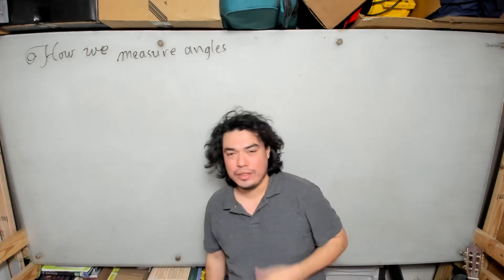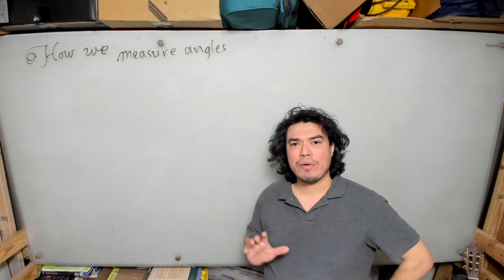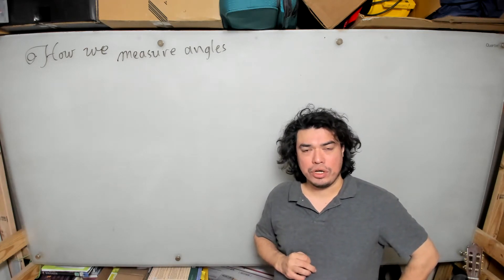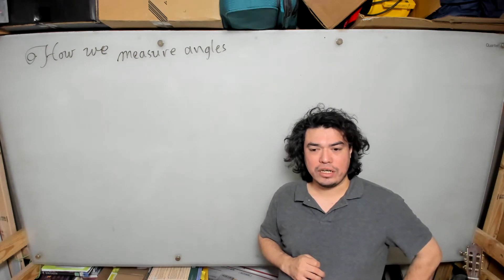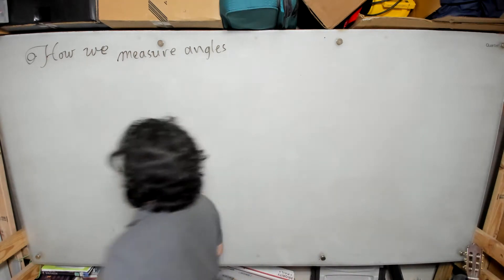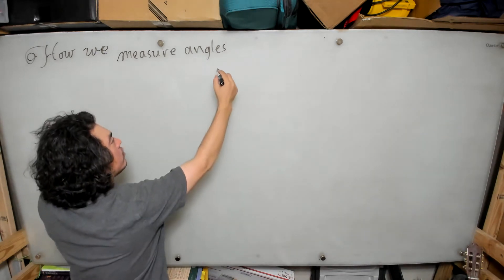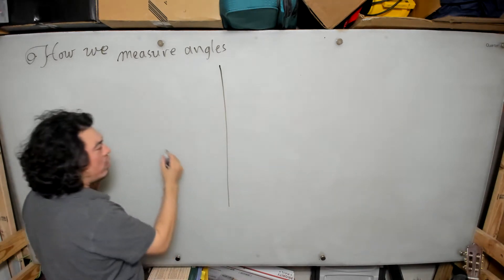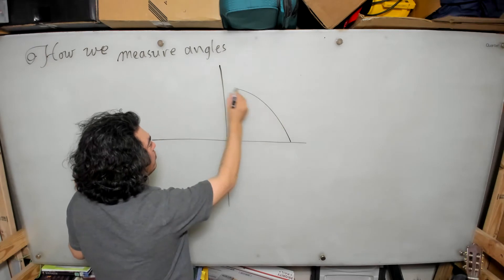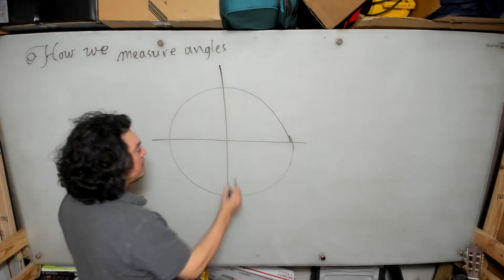Now that we've talked about radians and degree measure and we've talked about the unit circle — a circle of unit radius that we used to serve as our ruler for angles — we're going to look at one of the nice consequences of this. Let's assume we have a unit circle, a circle of radius one.